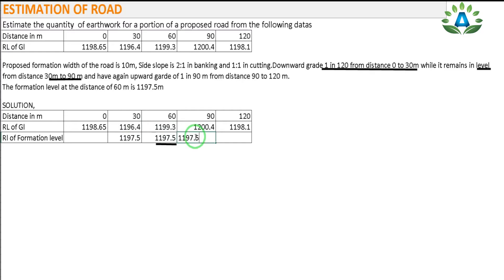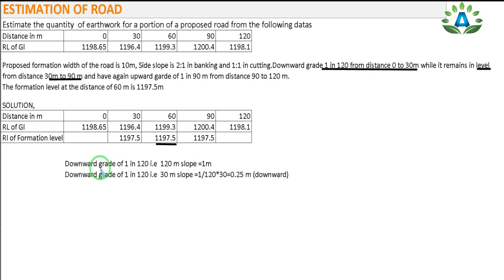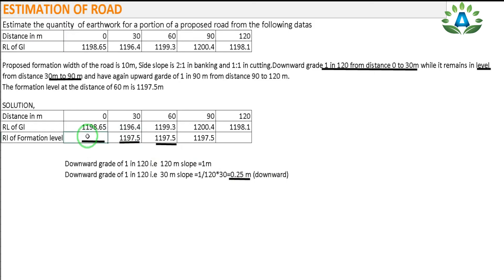From 0 to 30 m there is a downward gradient, so the RL at 0 m must be higher than at 30 m. A downward grade of 1 in 120 means 120 m of slope equals 1 m of fall. For a 30 m interval the fall is (1/120) × 30 = 0.25 m. Therefore the formation level at 0 m is 1197.5 + 0.25 = 1197.75 m.